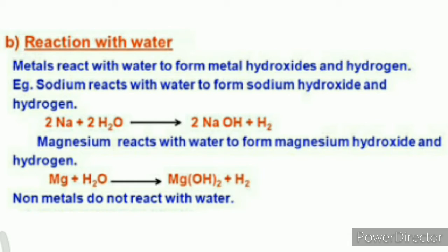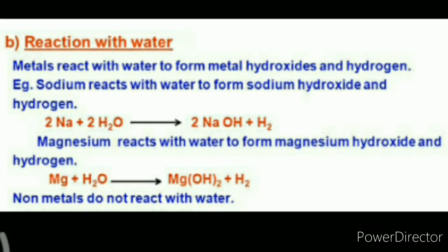Dhatu-tattva jab paani ke saath racinic prakriya karatay hai, to metal hydroxide banatay hai, aur saath me hydrogen bhi banatay hai. Udaharan ke liye, jab sodium paani ke saath reaction karatay hai, to sodium hydroxide aur hydrogen bantay hai. Iske alawa, jab magnesium paani ke saath reaction karta hai, to magnesium hydroxide aur hydrogen banta hai. Aur jahan tak baat hai adhatu-tattva ki, to adhatu-tattva paani ke saath koi racinic prakriya, yaani ki chemical reaction nahi karte hain.